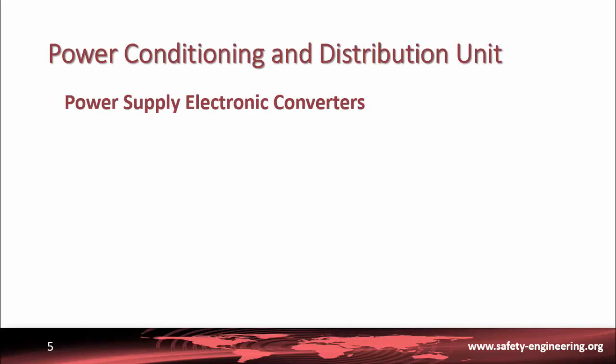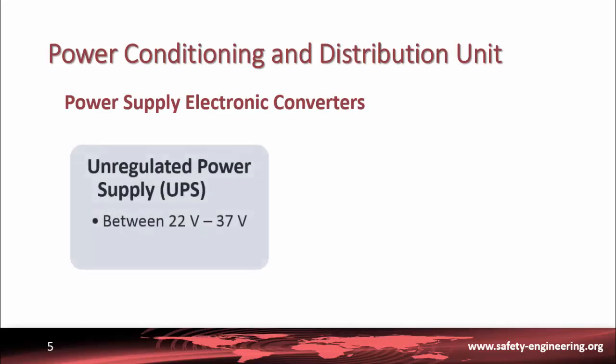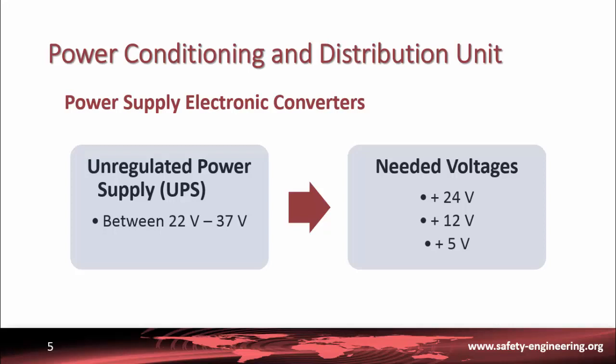They are responsible for transforming the unregulated power supply provided by the solar array and the battery between 22 volts and 37 volts to the diverse voltages needed by the satellite equipment such as 24 volts, 12 volts and 5 volts.